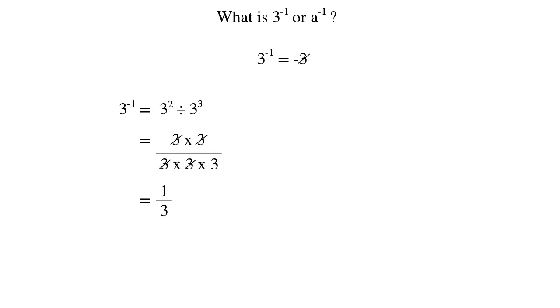Similarly, if we had 4 to the negative 1, we could write this as a calculation. And one of these could be 4 squared divided by 4 cubed, because 2 minus 3 will give us negative 1.